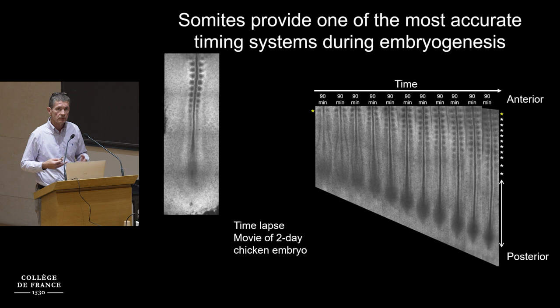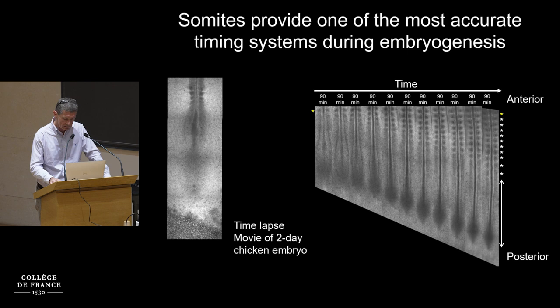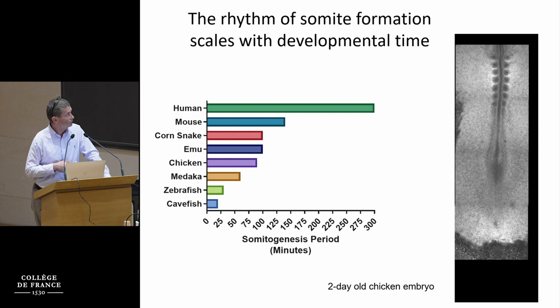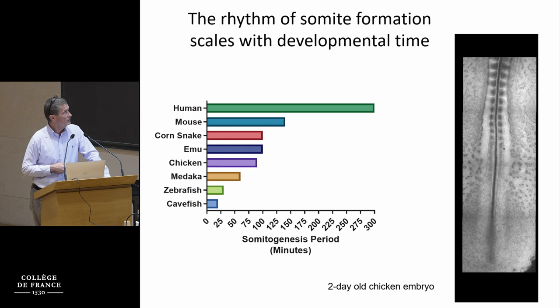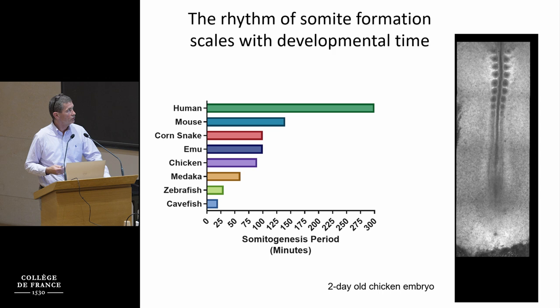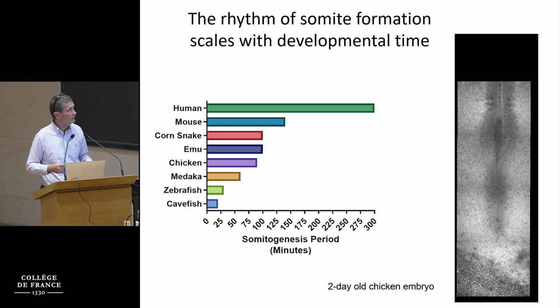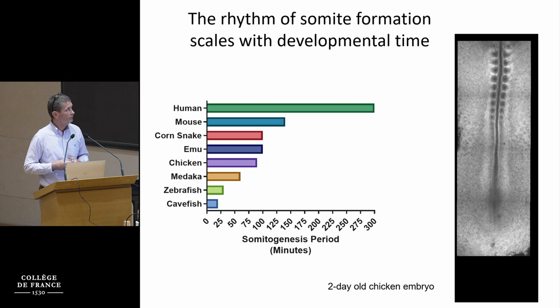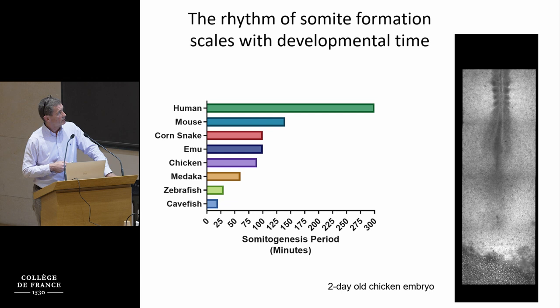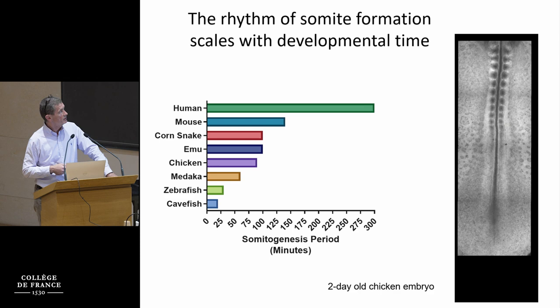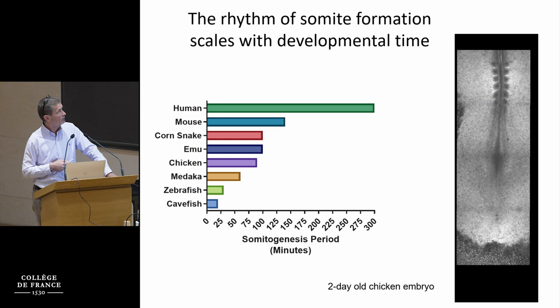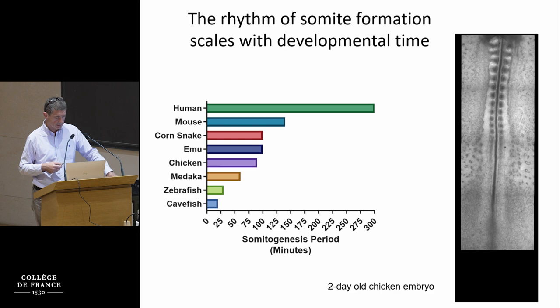In the chicken embryo, the somites form every 90 minutes, such that you can get an idea of the real time that has elapsed between the formation of somites, and then reason in absolute time using this system. The rhythm of somite formation scales with embryonic time, and you can play with temperature to change both the pace of embryonic time and the pace of somite formation, and these remain in synchrony — a pretty fascinating property of developing embryos.